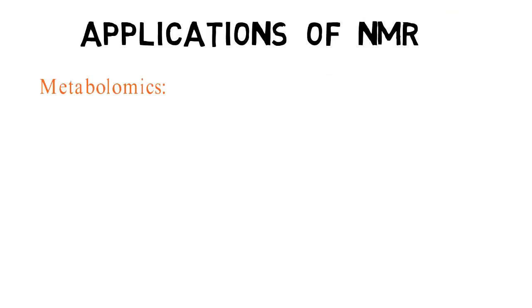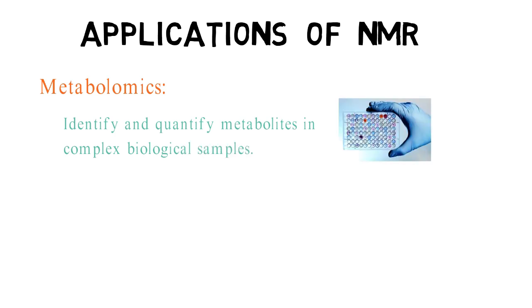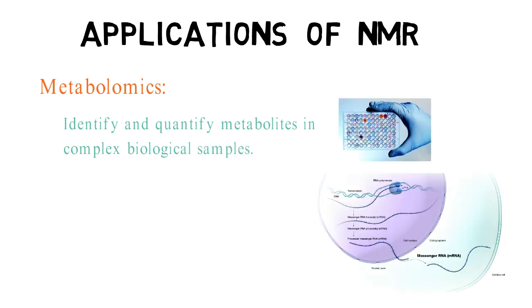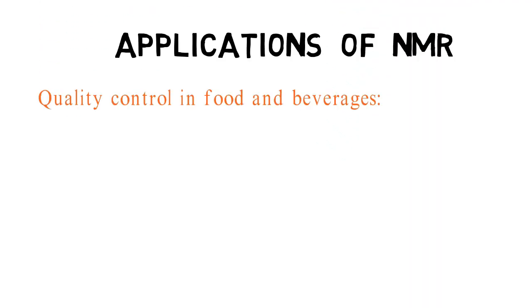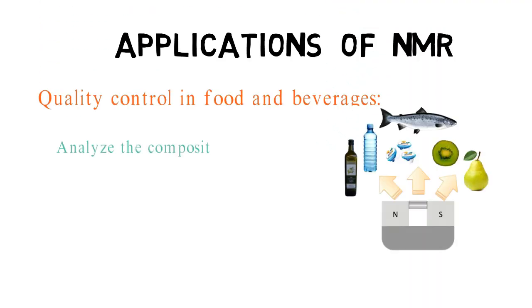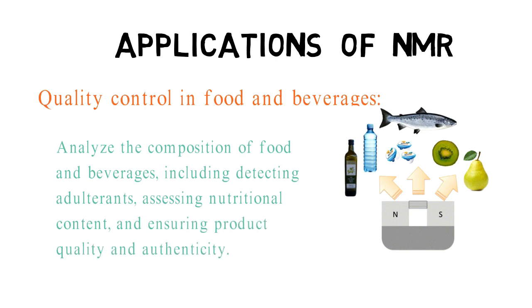Nuclear magnetic resonance spectroscopy is employed in metabolomics studies to identify and quantify metabolites in complex biological samples, helping in understanding metabolic pathways and identifying biomarkers for various diseases. It is also utilized to analyze the composition of food and beverages, including detecting adulterants, assessing nutritional content, and ensuring product quality and authenticity.